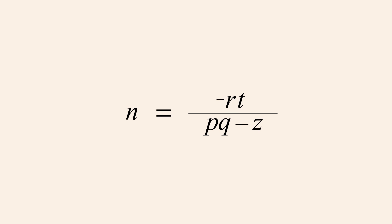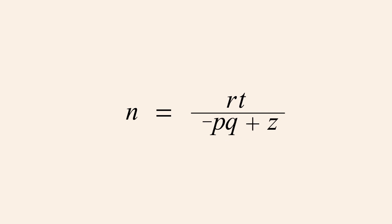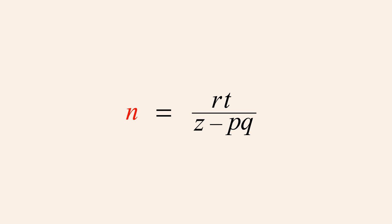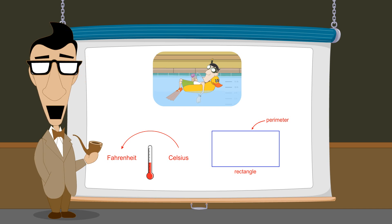If we like, we can change the sign of the numerator of the fraction on the right to positive by multiplying the top and bottom of the fraction by negative one. This flips the sign of the numerator and the signs of both terms in the denominator. The positions of the two terms in the denominator can then be swapped. Since the variable n is alone on the left side, we have solved this equation for n. In the last several lectures we have studied linear equations and shown how they can be applied to real-world applications. In the next lecture we will show how to create linear equations which can solve various types of real-world problems. We'll see you next time.